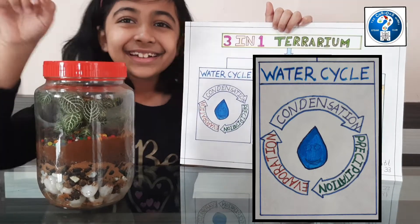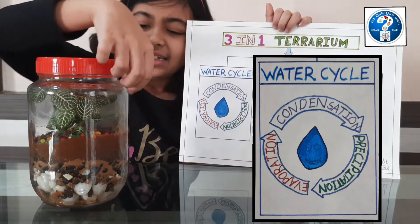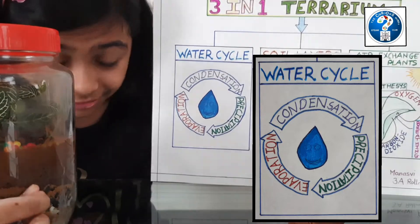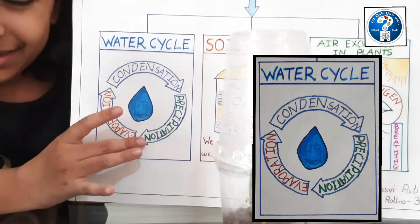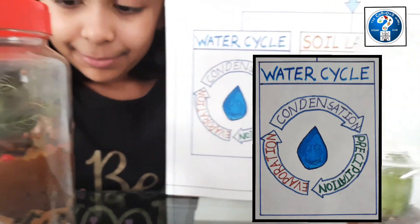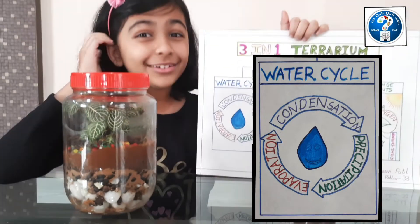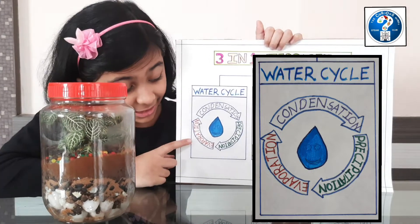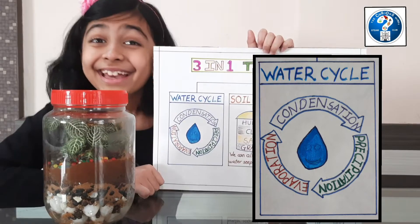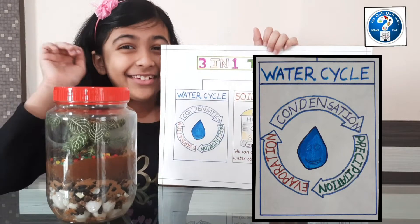That is called condensation. It is just like little clouds forming above it. Then happens precipitation. You can see tiny drops that are falling down to the soil. This is called precipitation. They go down to the soil and then the plant's roots can absorb some. I also wanted to tell you that during evaporation, the plant also lets out water vapor. So the cycle goes on and on and will never run out of water.